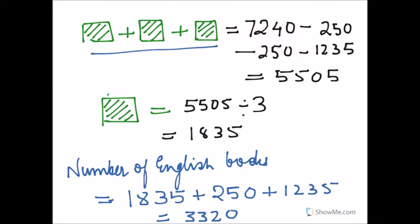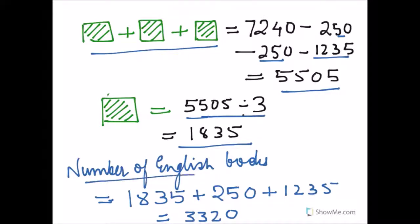So 3 units equals 7,240 minus 250 minus 250 minus 1,235, which equals 5,505. If 3 units equal 5,505, then 1 unit equals 5,505 divided by 3, which is 1,835. The number of English books equals 1,835 plus 250 plus 1,235, which equals 3,320. Hope you've understood.